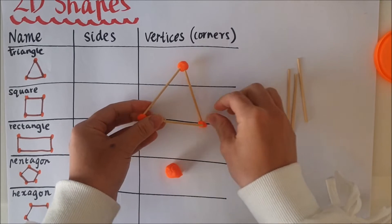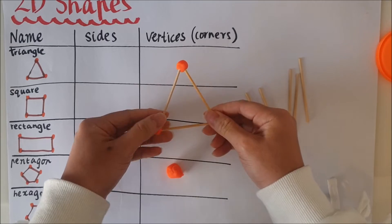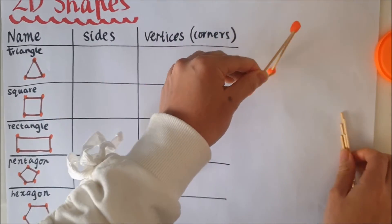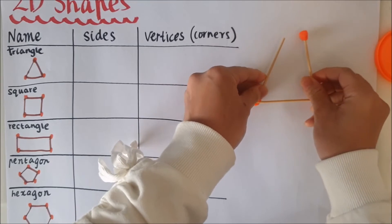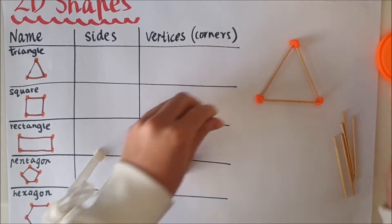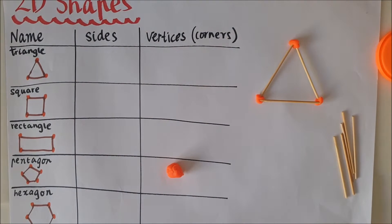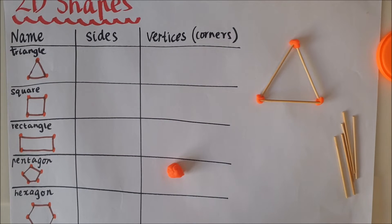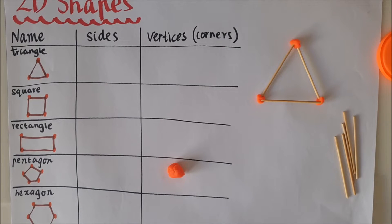So here I have a triangle. Alright let's have a look. So when I make the shape with the play-doh and the toothpicks I can easily see the vertices and the sides. So orange is the vertices and the stick is the sides.